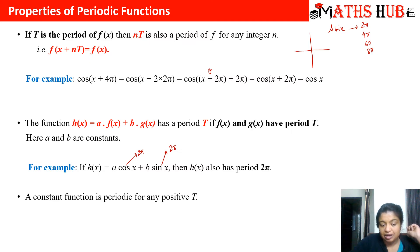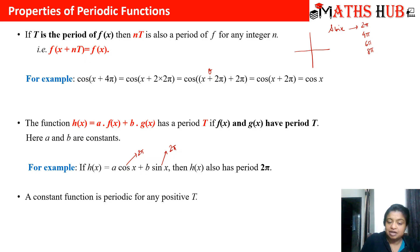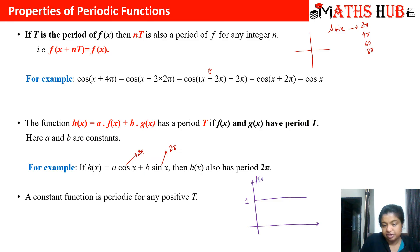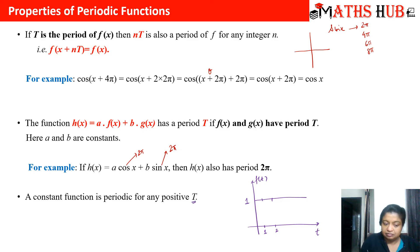Property 3: a constant function is periodic for any positive t. If you draw a constant function, you can see that it repeats for any interval you choose — you could take period 1, period half, or any positive value. So for any positive t, the constant function is a periodic function.